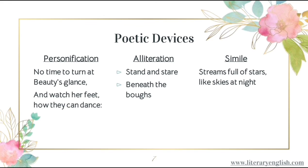The second poetic device is alliteration. Alliteration is the repetition of the first sound of words closely placed together within a line. The sound of S is repeated in 'stand and stare,' and the sound of B is repeated in 'beneath the boughs.'